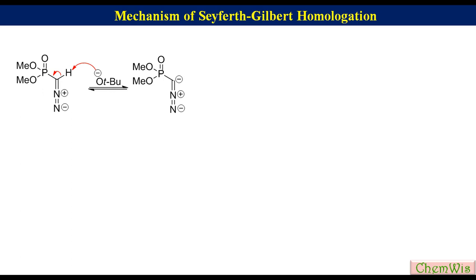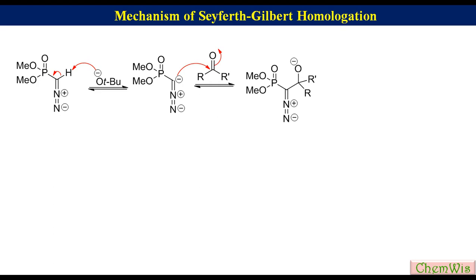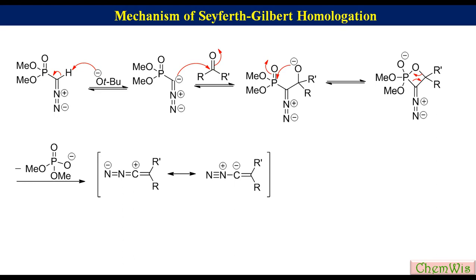In the mechanism of Seyferth-Gilbert homologation, base abstracts a proton from dimethyl diazomethyl phosphonate to produce the dimethyl diazomethyl phosphonate anion, which acts as a nucleophile and attacks the carbonyl carbon to produce an alkoxide. This undergoes ring closure to produce an oxaphosphetane. Just like in the Wittig reaction, elimination of dimethyl phosphate ion gives a vinyl diazo intermediate, which eliminates nitrogen gas to produce vinylidene carbene.